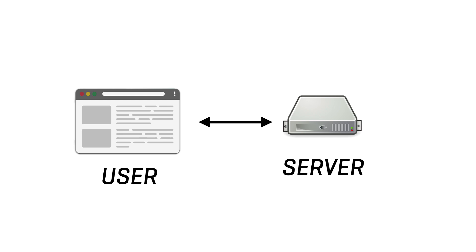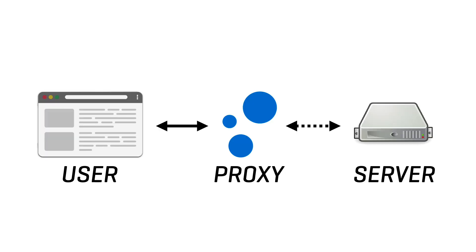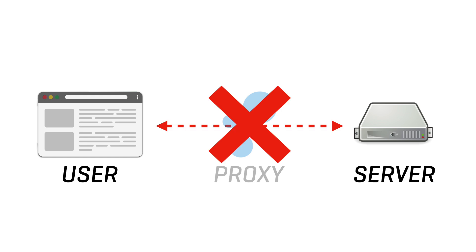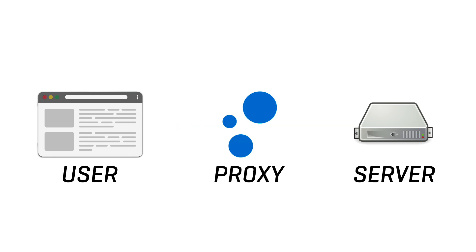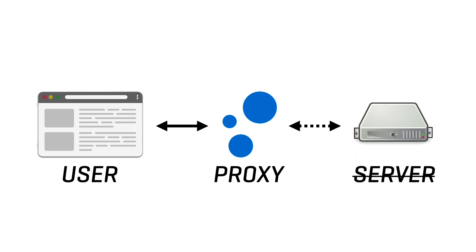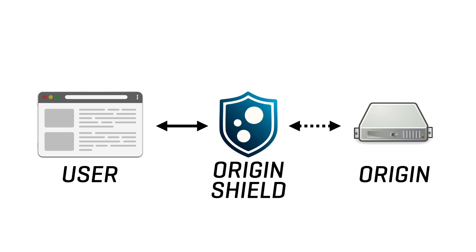Before I can talk about that, I need to explain what the origin is that we're shielding. In a lot of web-based architectures, proxy servers are added in front of the web and application servers to add extra capabilities to the overall web platform. This means that users don't directly connect to the application and web servers anymore — instead they unknowingly connect to those proxy servers and benefit from those extra capabilities. Meanwhile, those proxy servers forward the requests from the clients to the server where the data originates from. Hence the term 'the origin,' and the proxy then becomes the origin shield.